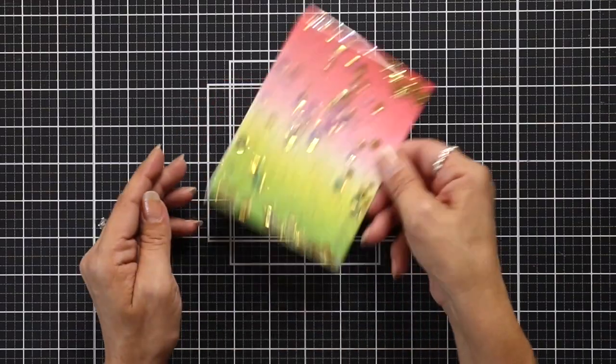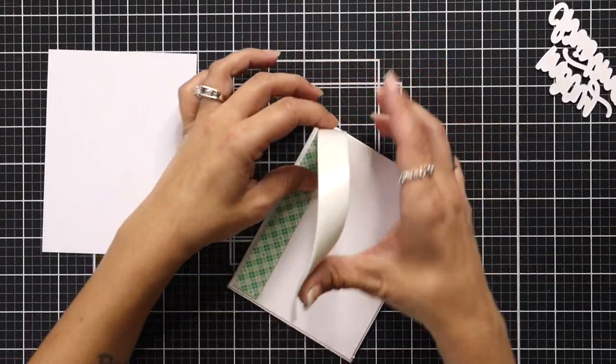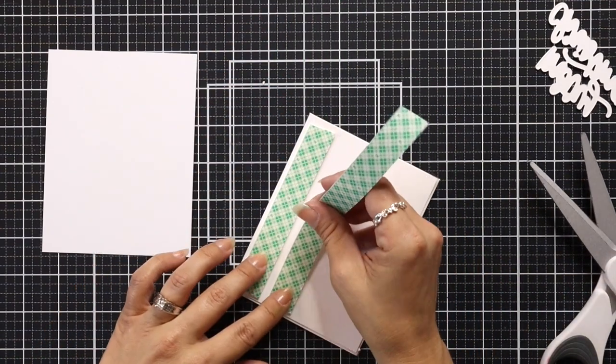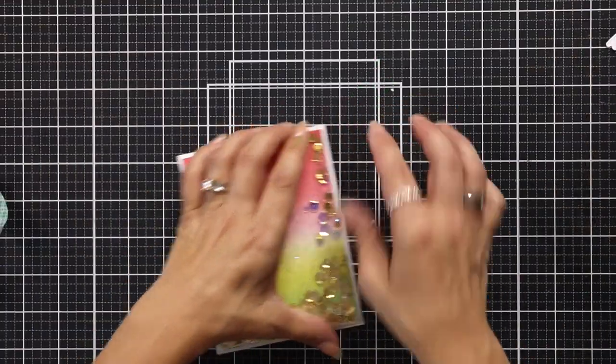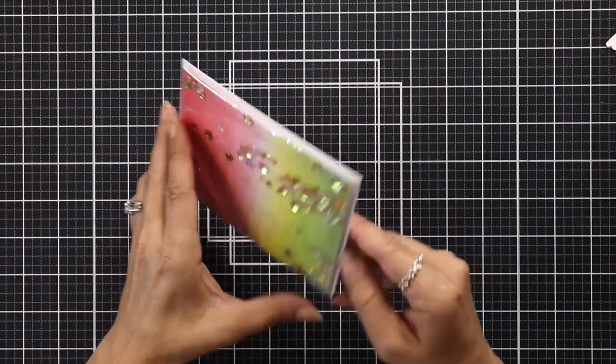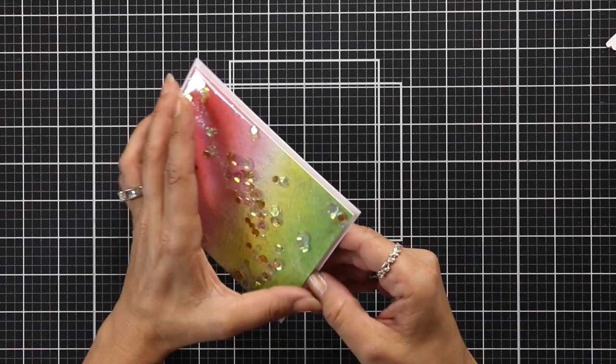So now I'm going to take foam tape and just align the back of this panel with the foam tape to add a little bit of dimension to the card. And I will be adding this to a card front that is going to be four and a quarter by five and a half. And then how fun is this? It's so sparkly and pretty and it just makes an amazing background.